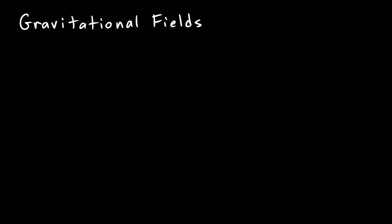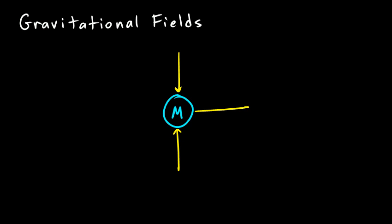Let's start with gravitational fields. If you have some mass — this could be the Earth, for example — every mass has a gravitational field around it. We represent the field with field lines drawn as arrows, and I'm going to draw them always pointing inward. That's because gravity always attracts and pulls. Any object near the Earth will be pulled toward it, and the inward direction of the arrows represents that.